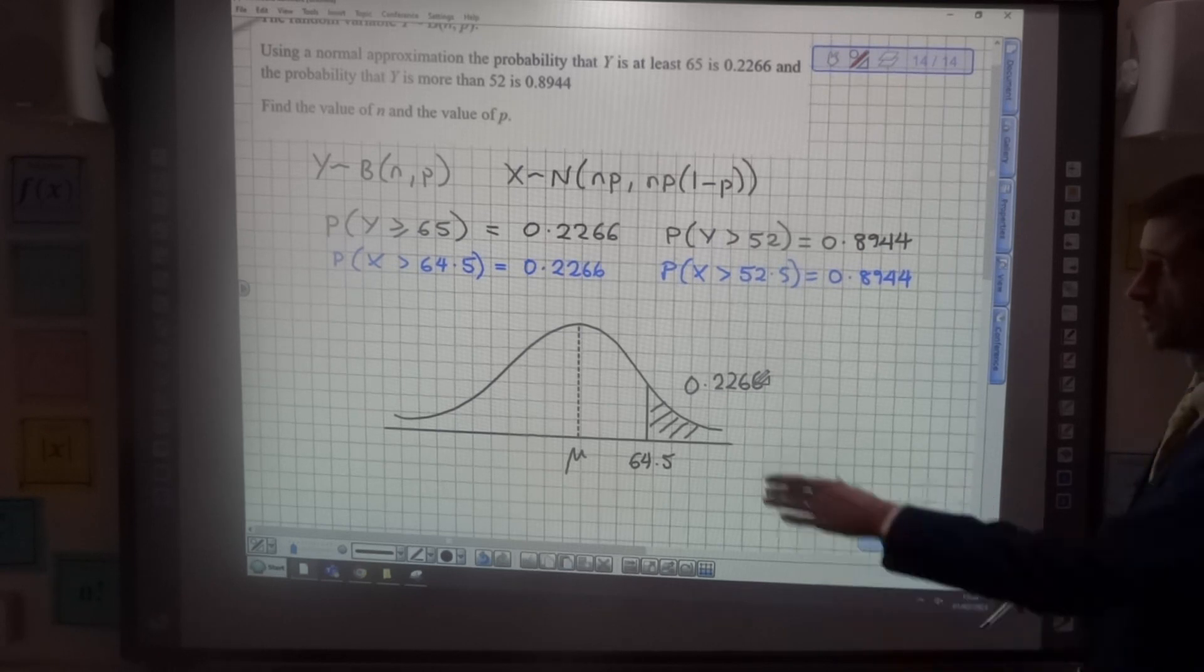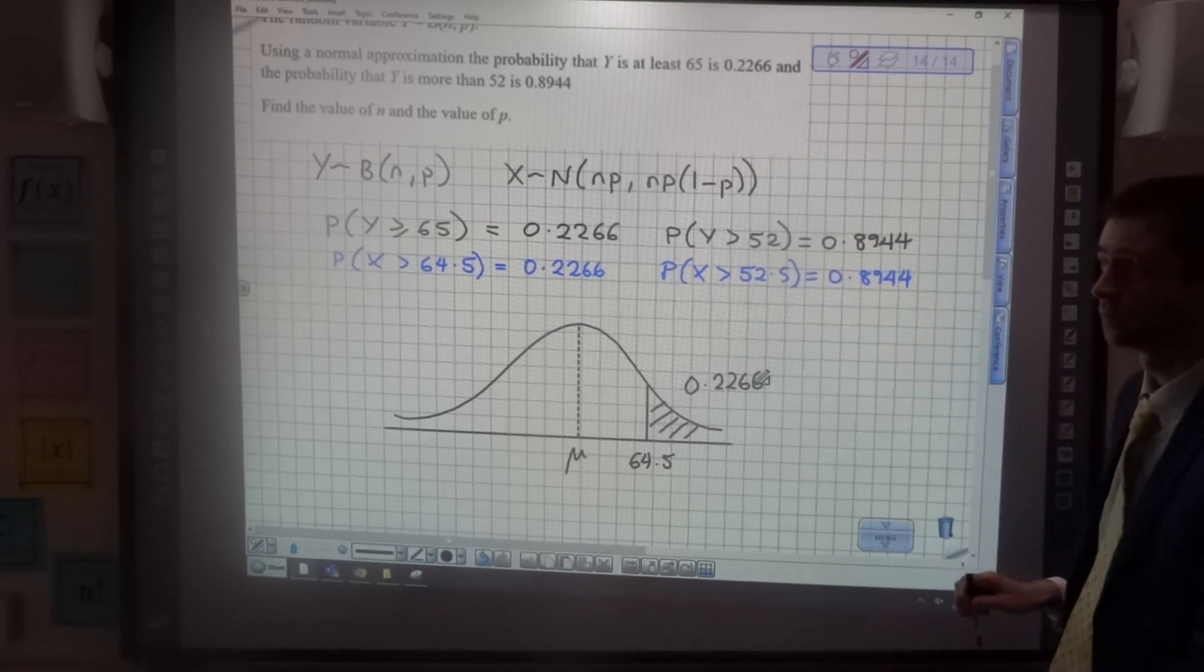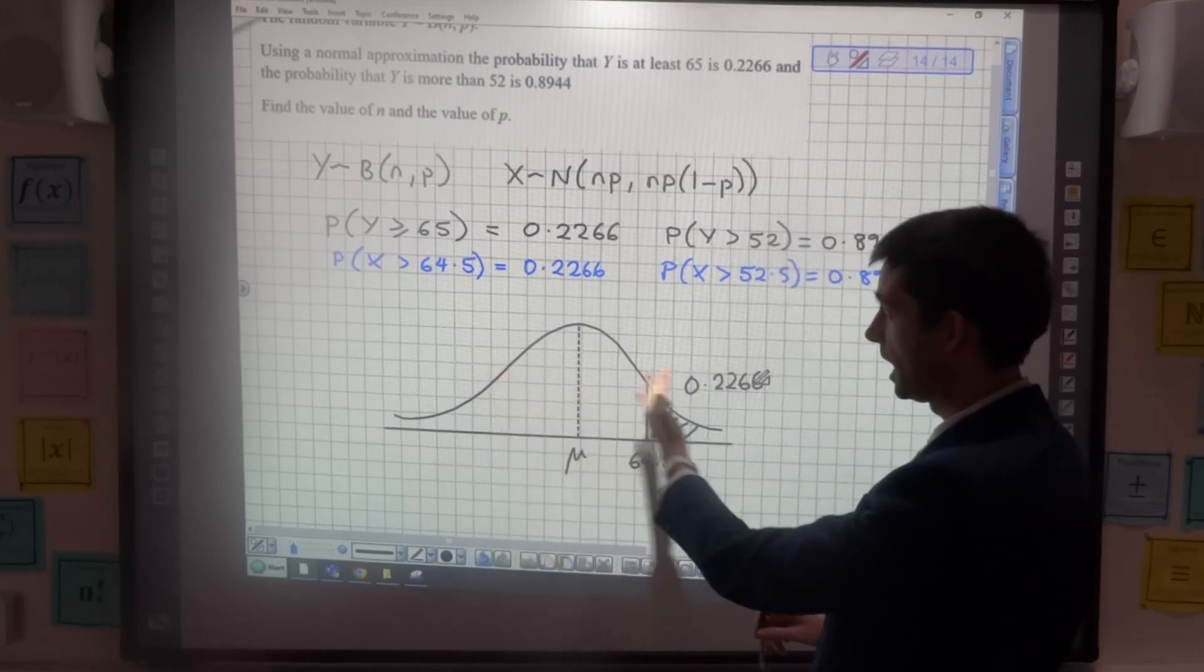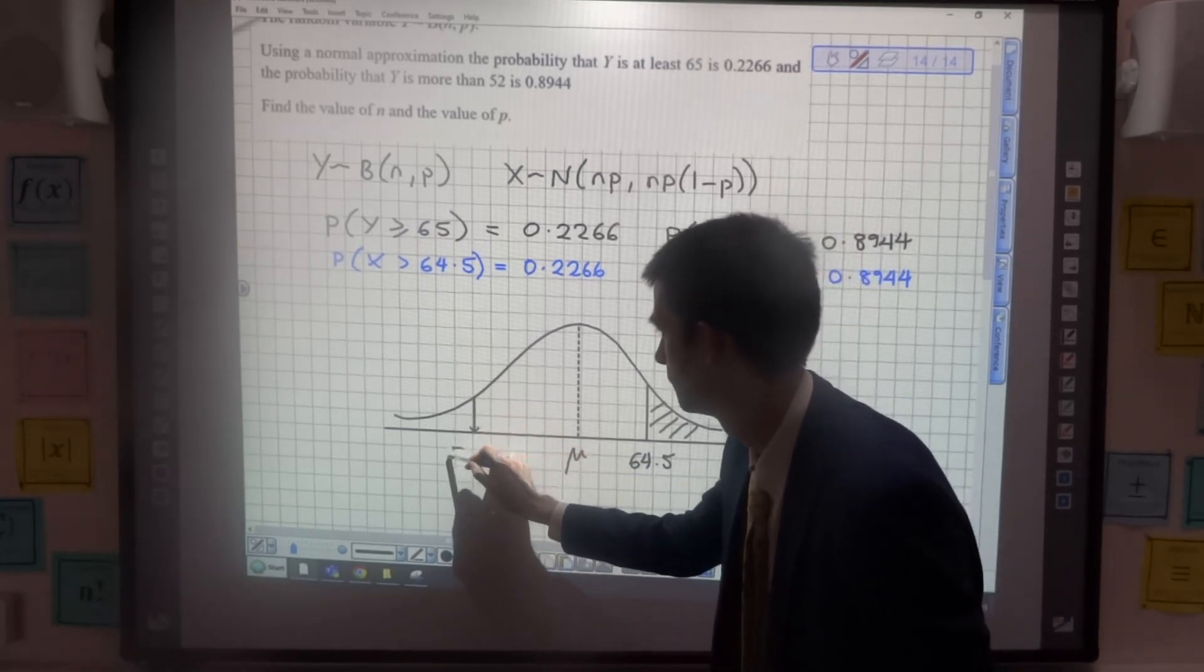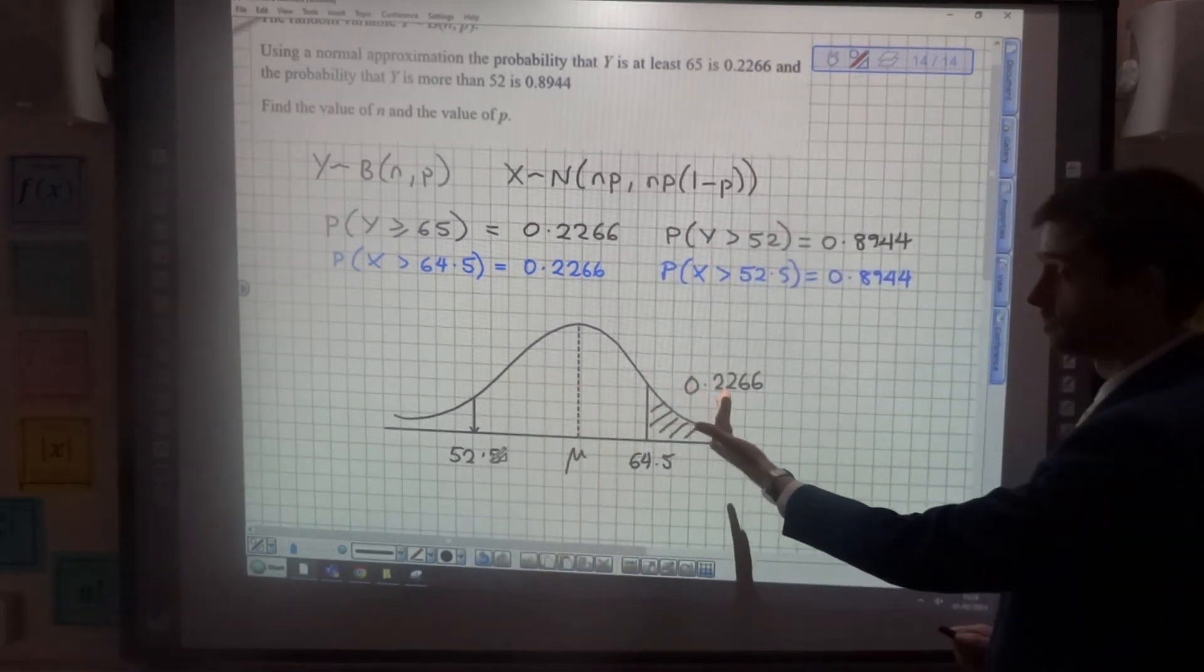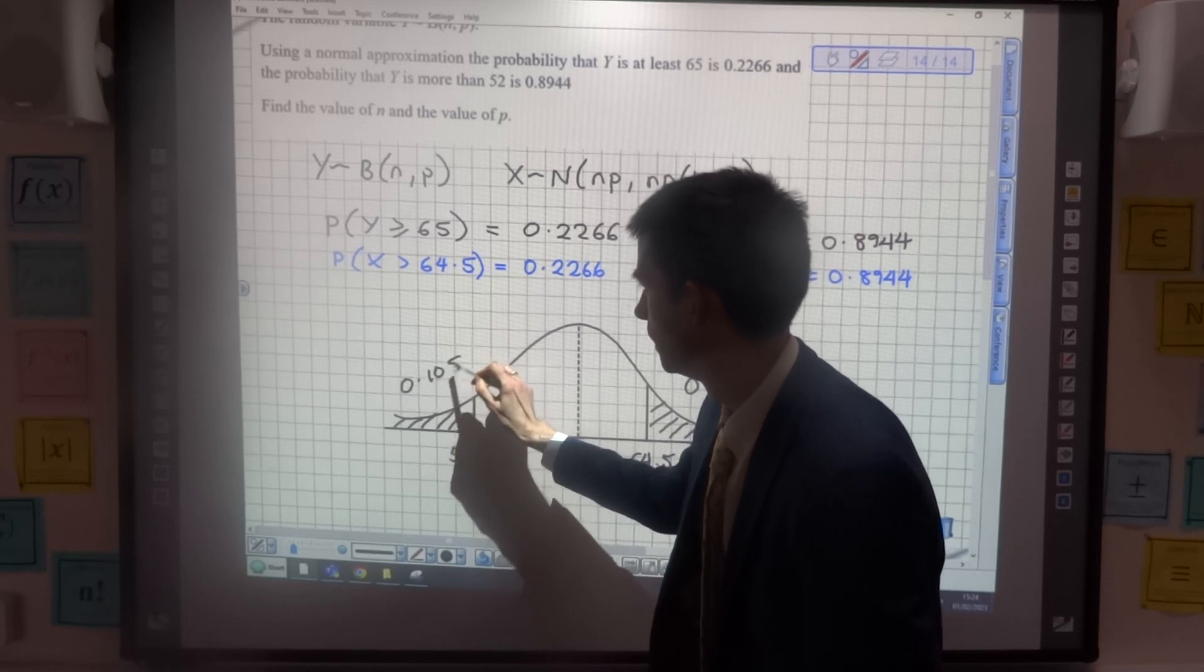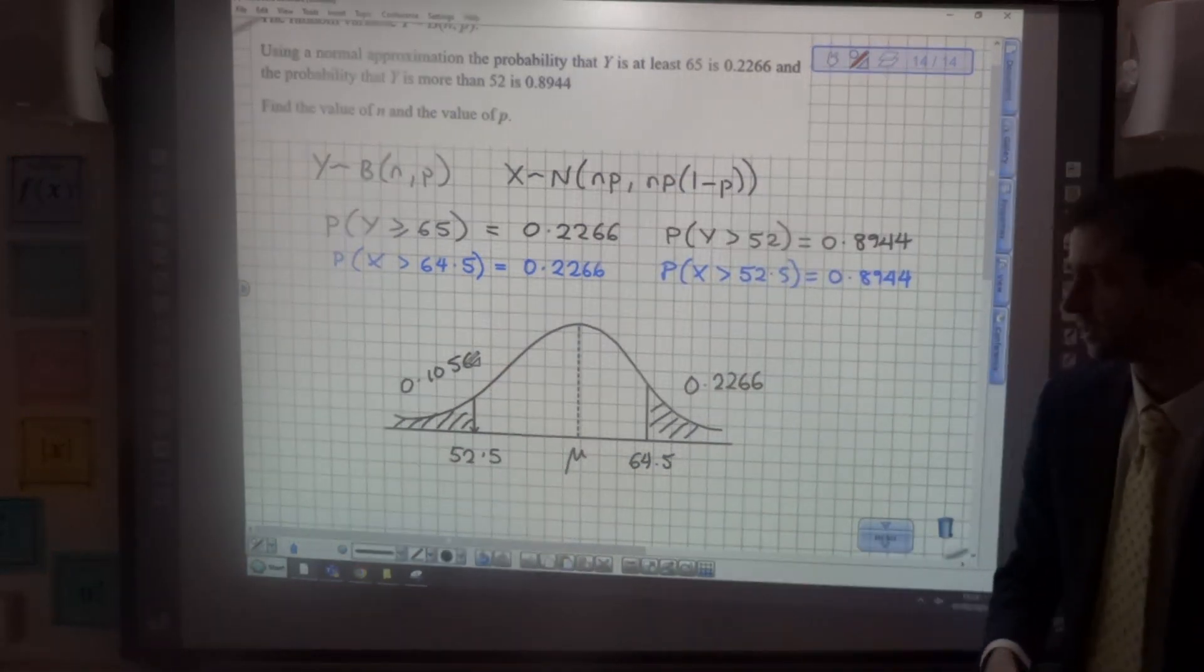The other bit of information we have is that the probability of X being greater than 52.5 is 0.8944. Now that's way over half, so 52.5 is going to be here, 0.8944 to the right of that. So let's put 52.5 in here. And now all of this area is 0.8944. I'm not actually going to label that area, I'm going to label this area as 0.1056, so everything else, and you'll see why I'm doing that shortly.